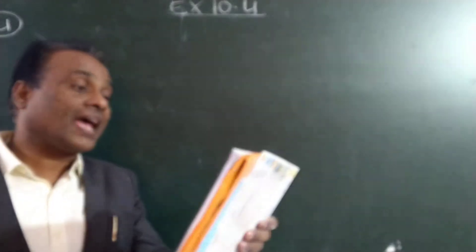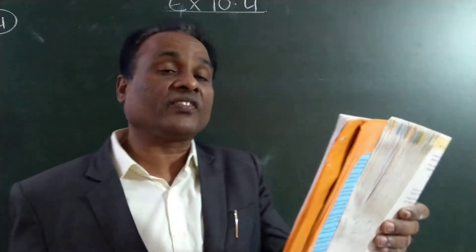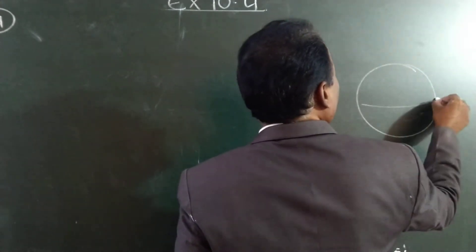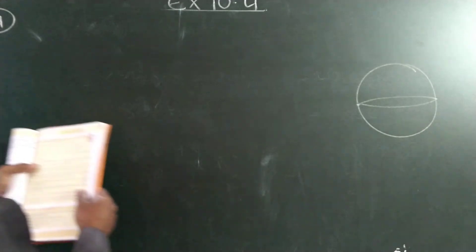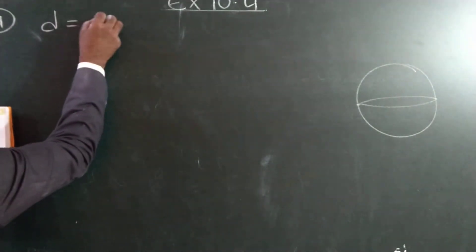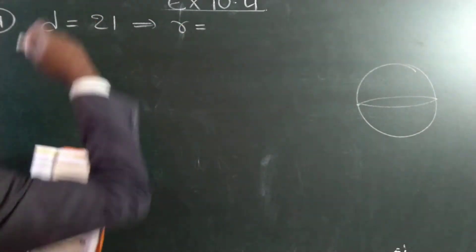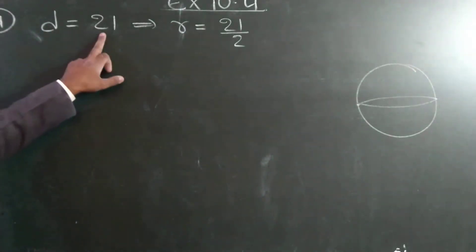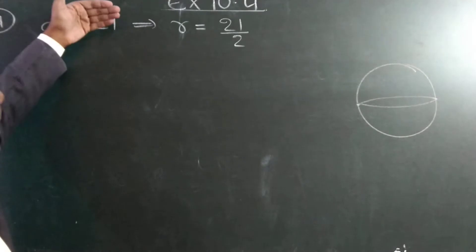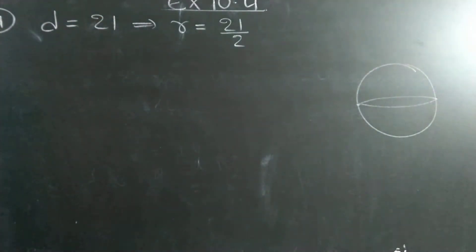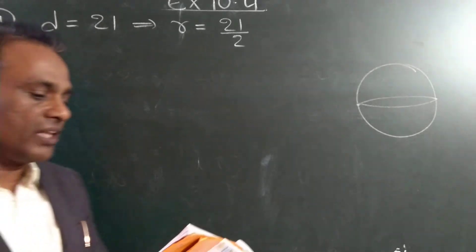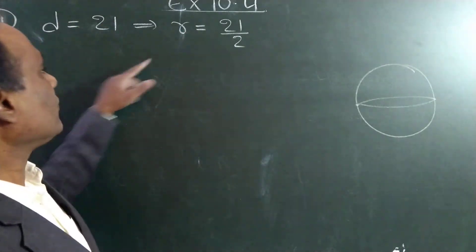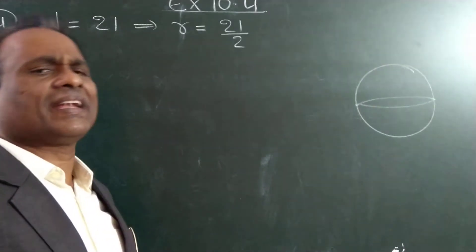Now, fourth problem. Diameter of a spherical ball is 21 cm. All problems are sphere — only two cases. Diameter of the spherical ball is equal to 21. Then what is the radius? Half of the diameter — 21 by 2. So diameter is 21, radius is diameter by 2. We don't want directly the diameter; we want radius. So radius is half of it — diameter by 2 is radius.